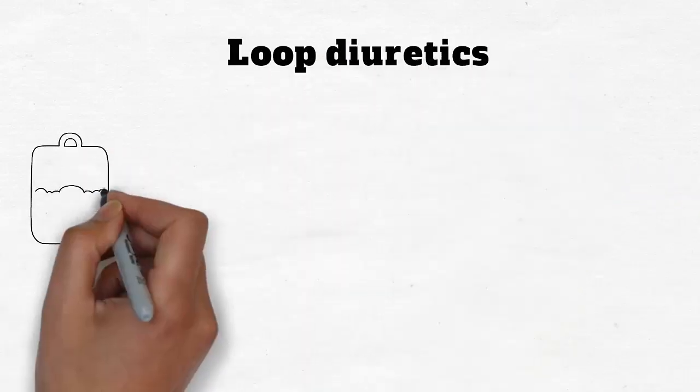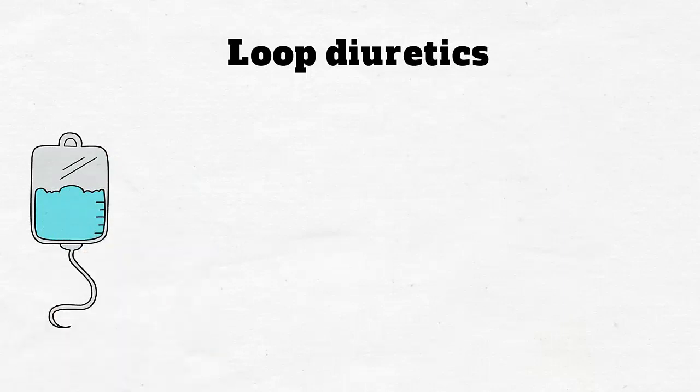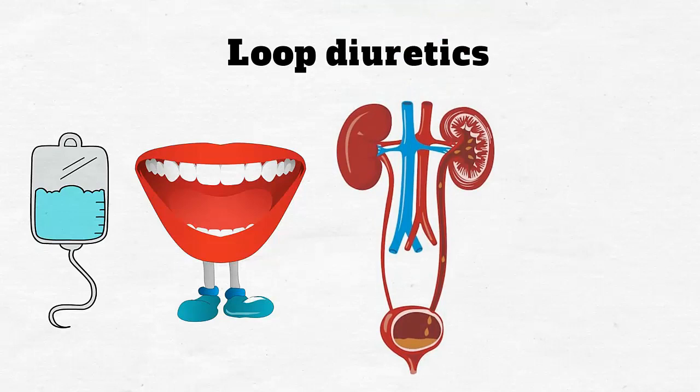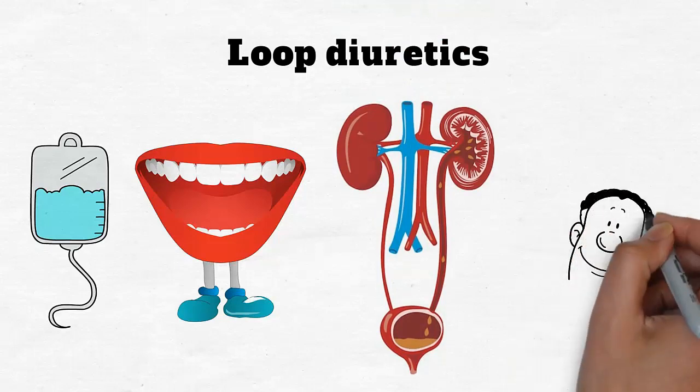Loop diuretics can be either administered via IV in a hospital setting or taken orally. They increase urine flow and remove water from the body better than any other diuretic.